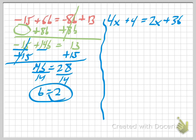Now let's see if that checks. Put 2 in there. We get negative 15 plus 6 times 2, that's plus 12. Equals negative 8 times 2, a negative times a positive gives me a negative 16 plus 13. If I combine these, negative 15 and positive 12 is negative 3. And if I combine these, negative 16 and positive 13 is also negative 3. And sure enough, they're equal, so it checks.